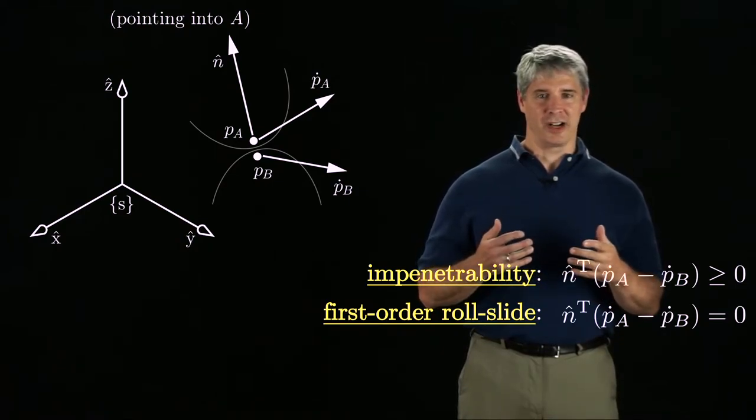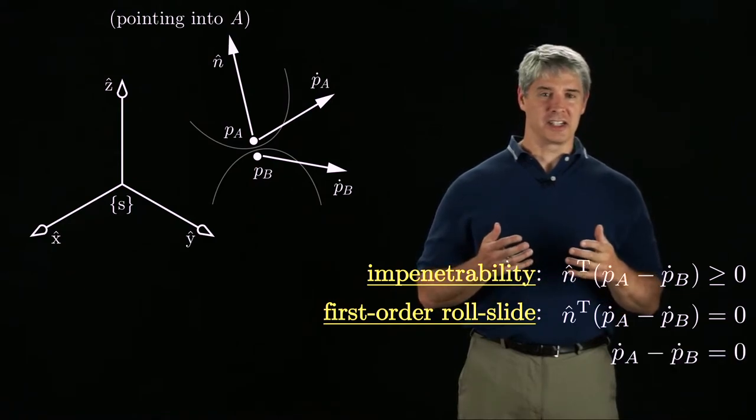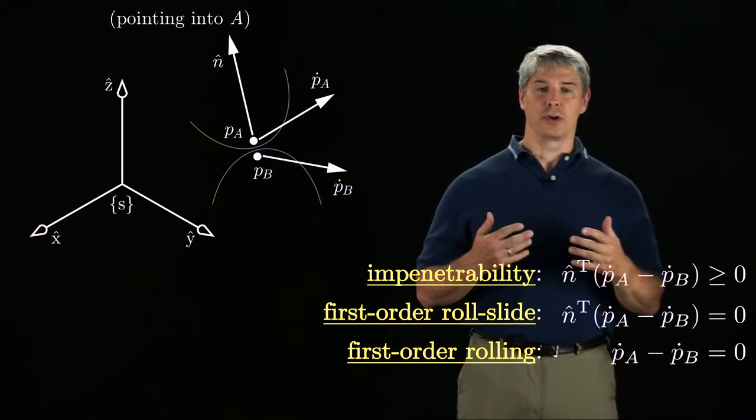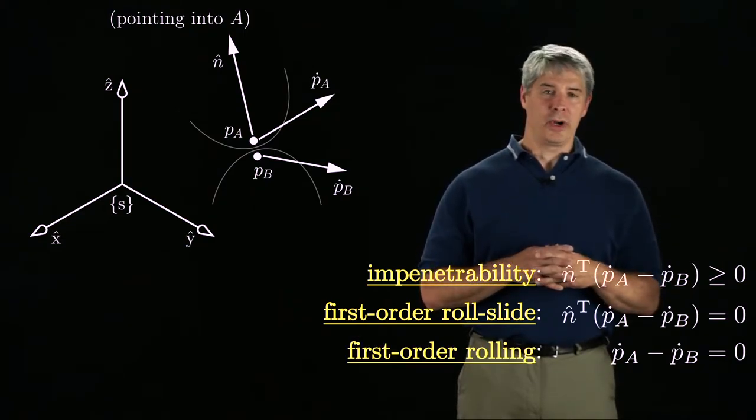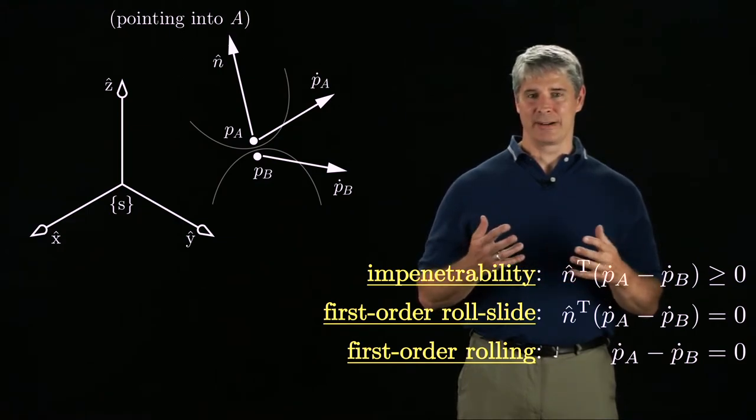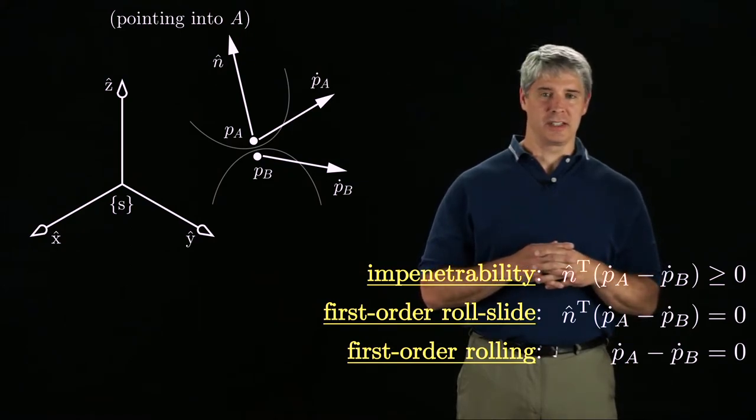The roll-slide constraint is a single equality constraint. If the stronger condition that P dot A equals P dot B is satisfied, we call this a first-order rolling contact. We could also call this a sticking contact, emphasizing that there is no sliding. The rolling condition places two equality constraints on planar twists and three equality constraints on spatial twists.